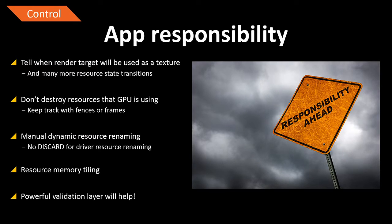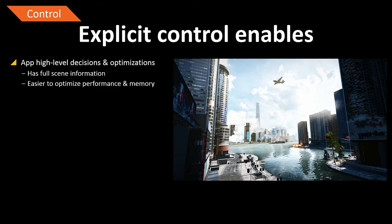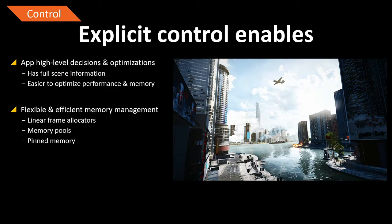What does this give us? As a game engine, we have full scene information — we know what we're rendering, simulating, and where all objects are. We can adapt these use cases for performance and memory optimizations based on high-level information that drivers in traditional models don't have. For example, we can use linear frame allocators — just like on consoles — using larger memory heaps and incrementing linearly on them, which is trivial to implement in Mantle.